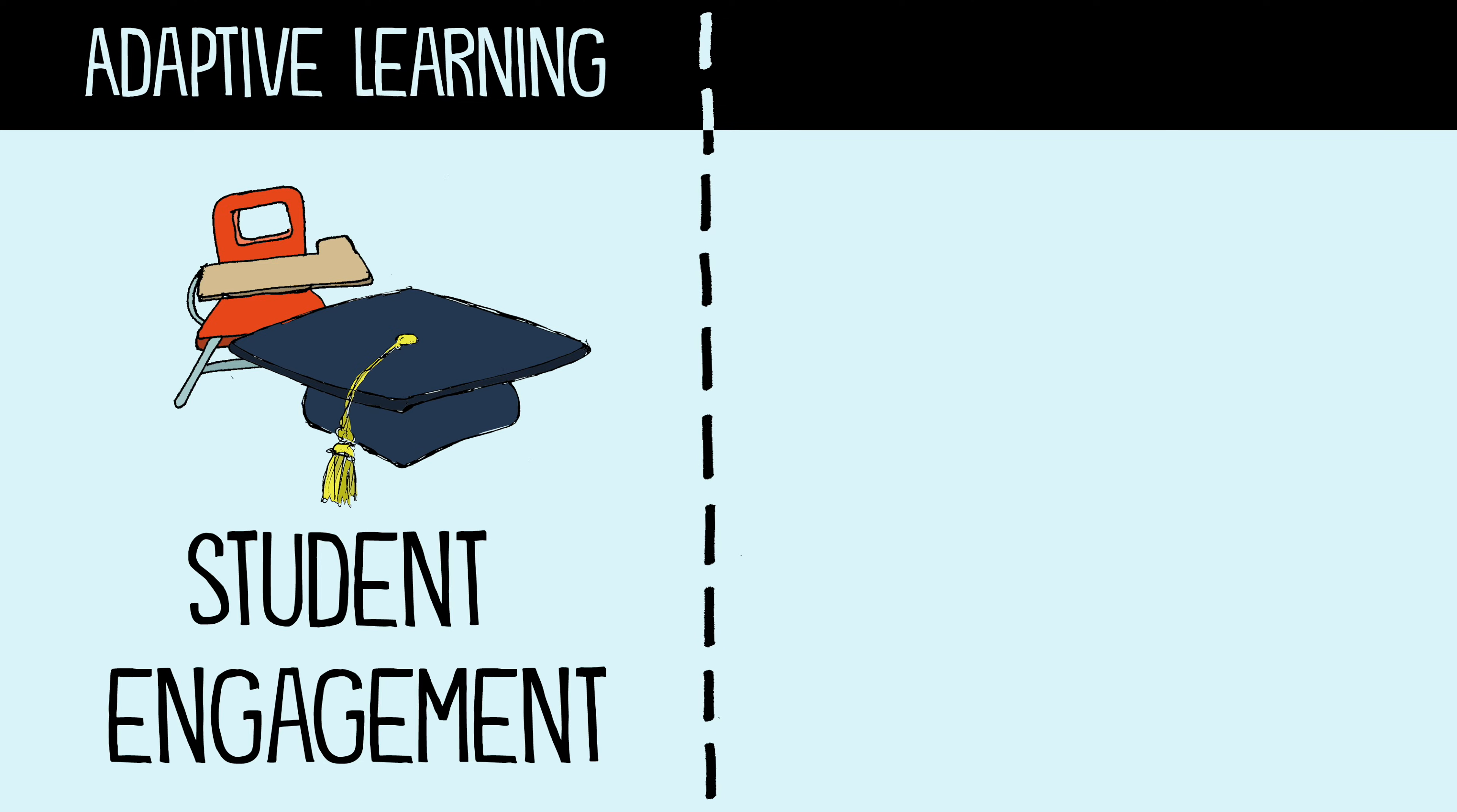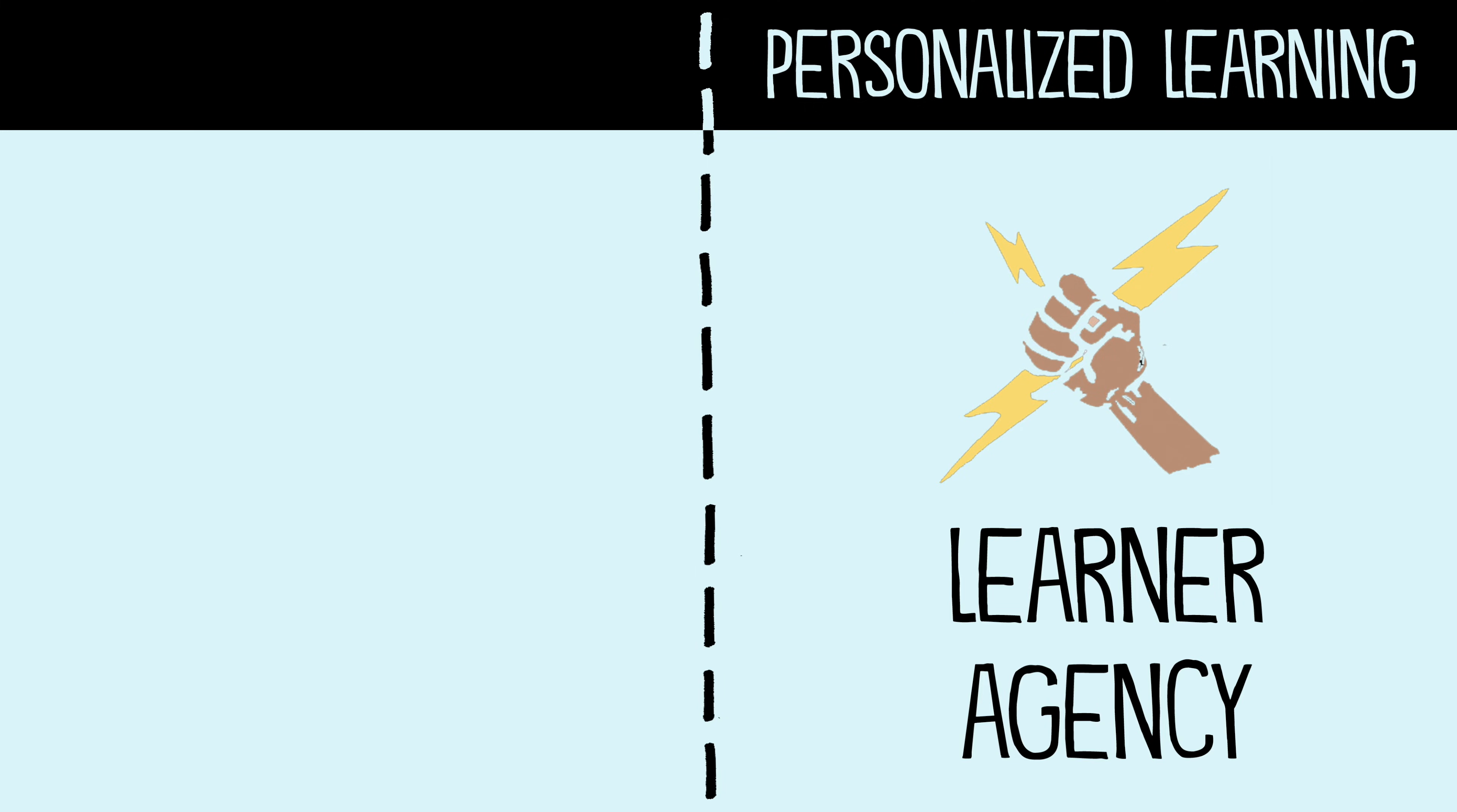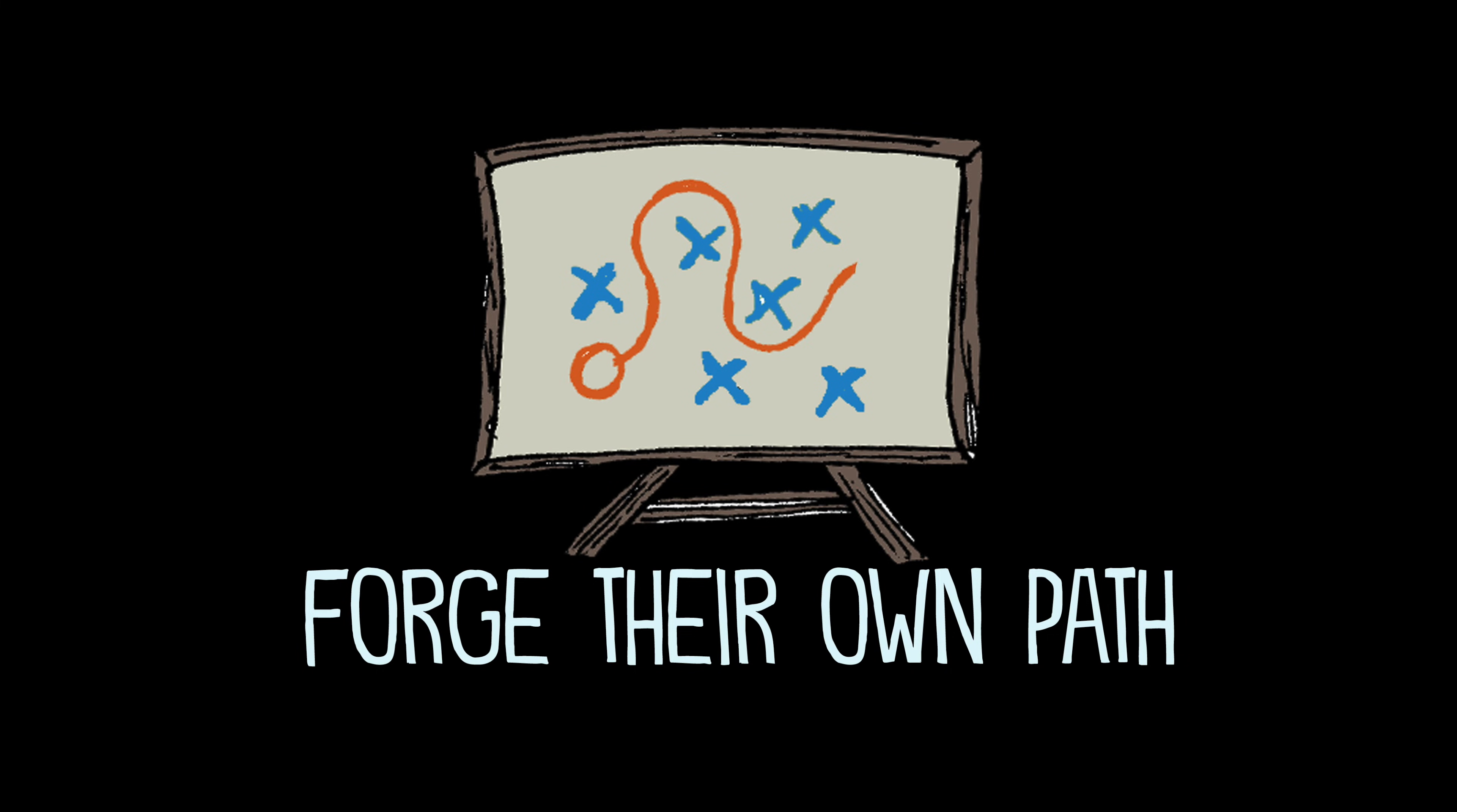Adaptive learning is built for student engagement. Students might get choices, but they have no real voice in the process. The system is more closed. By contrast, personalized learning focuses on learner agency. It moves beyond engagement into empowerment. Instead of simply making decisions, students actually forge their own path and they own the process.